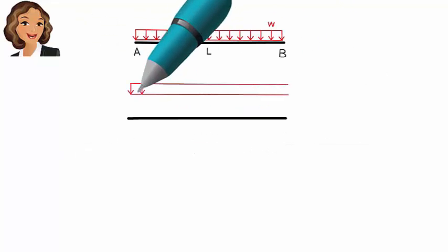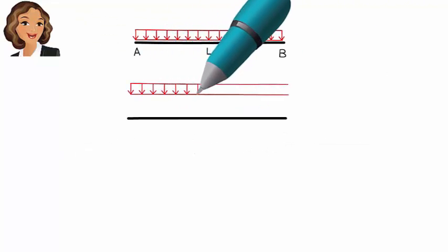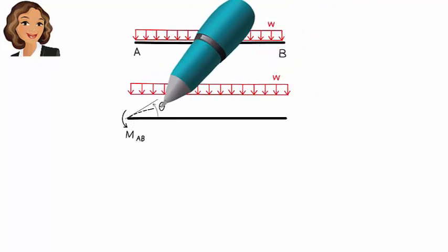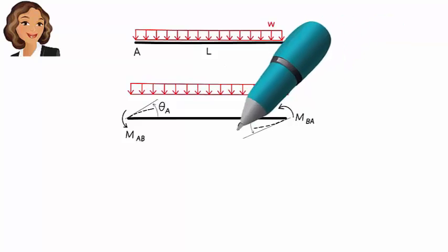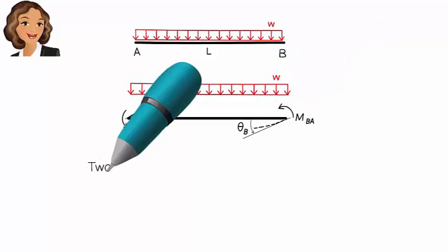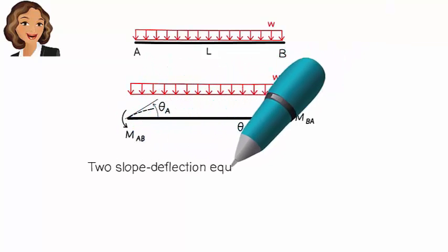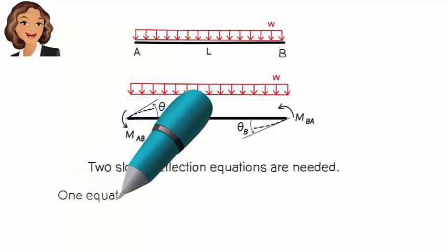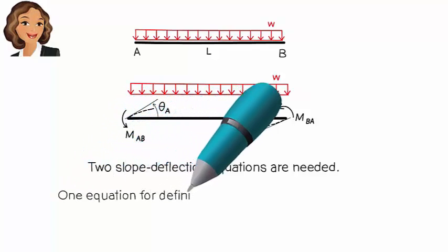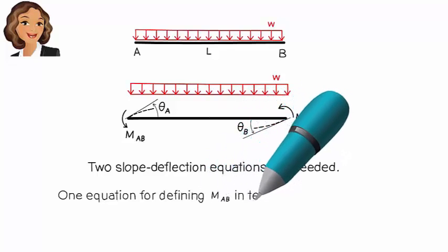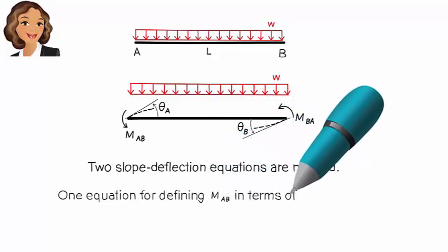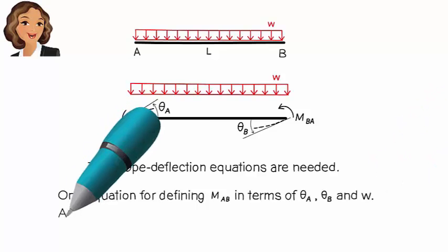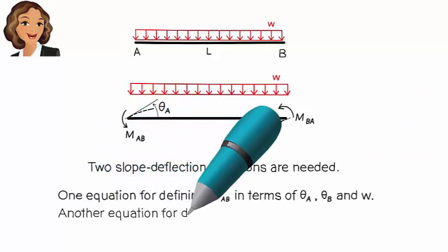We are going to follow our adopted sign convention and show the end rotations and moments in the positive, counter-clockwise direction. We need to write two slope-deflection equations: one for defining M-A-B in terms of theta-A, theta-B, and W, and another for expressing M-B-A in a similar manner.